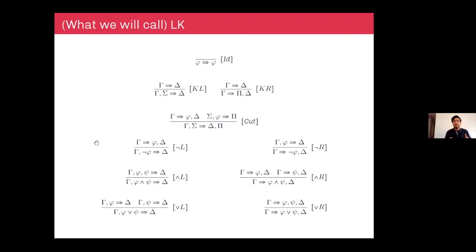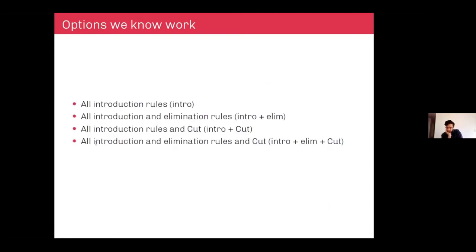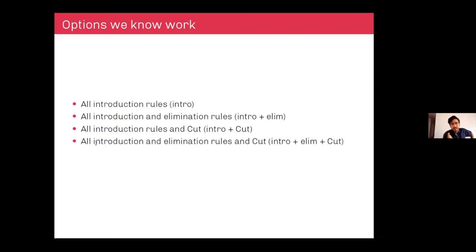This I will call K — not exactly what Gentzen presented in the 1930s but basically the same in spirit. The aim is to investigate sequent calculi for classical logic, meaning they derive all the classical sequents, and where cut is admissible. There are options already known in the literature. For example, we know that LK itself works: all the interaction rules plus cut plus reflexivity plus weakening gives you classical logic.